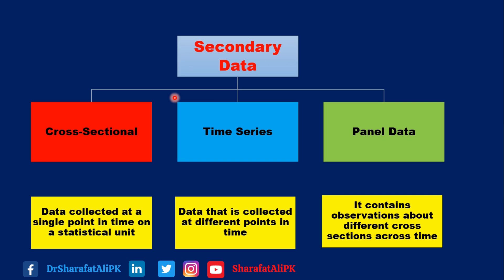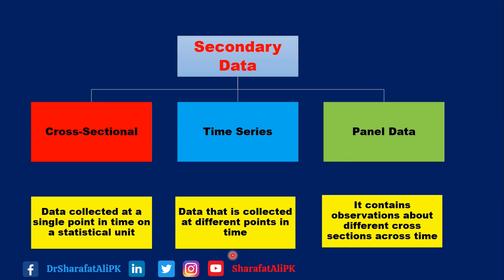Generally, there are three types of secondary data considered in these studies: cross-sectional data, time series data, and panel data. Cross-sectional data is data collected at a single point in time on a statistical unit, whereas time series data is collected at different points in time. Panel data contains observations about different cross-sections across time.